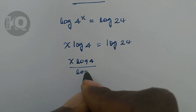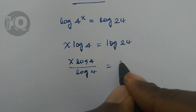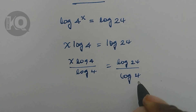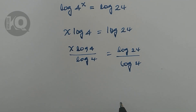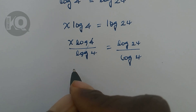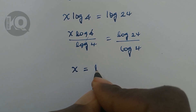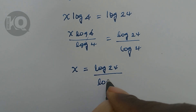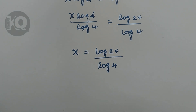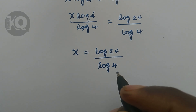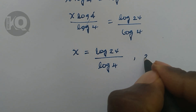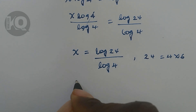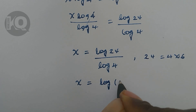Let's divide both sides by log 4. X times log of 4 divided by log of 4 equals log of 24 divided by log of 4. The log 4 terms cancel, so X is equal to log of 24 divided by log of 4. Now we can write 24 as 4 times 6.